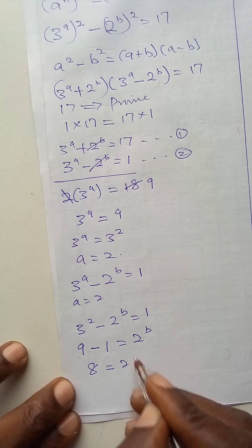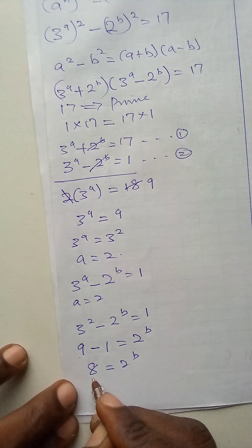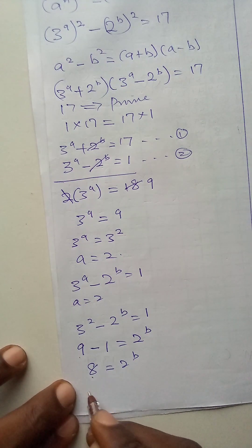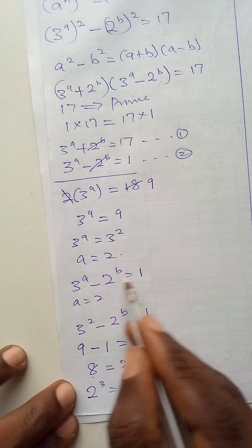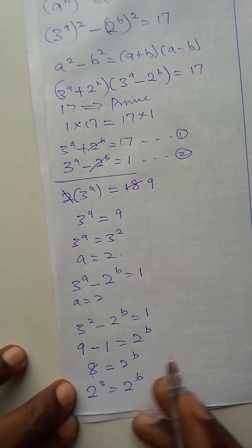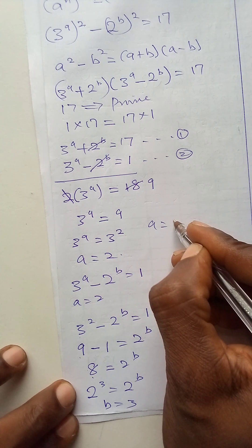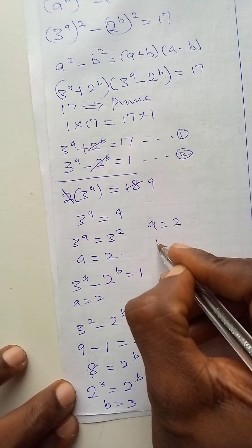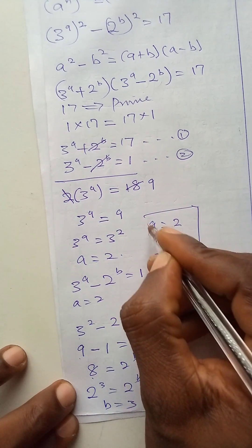8 is equal to 2 to power b. So, I can express it as a number in base 2. That becomes 2 to power 3 is equal to 2 to power b. What happens here, here, also happens here. That means that b is equal to 3. So, my a is 2 and my b is 3 as the answer.